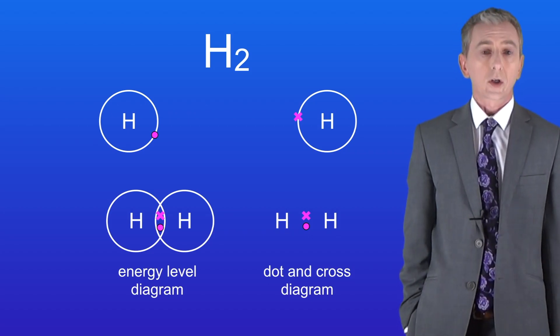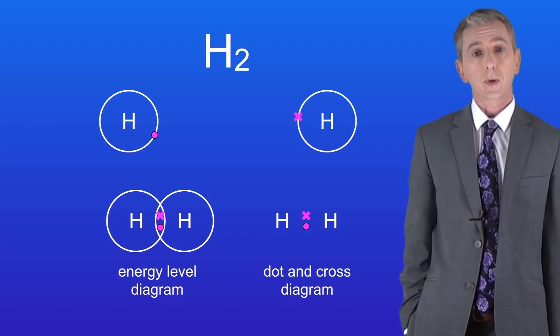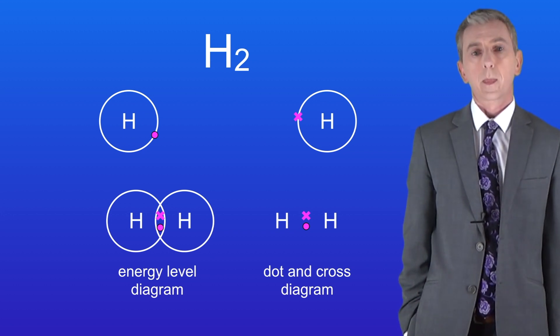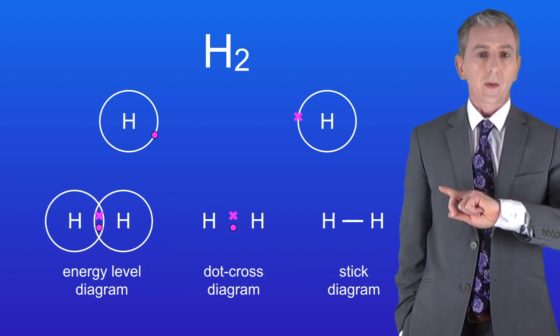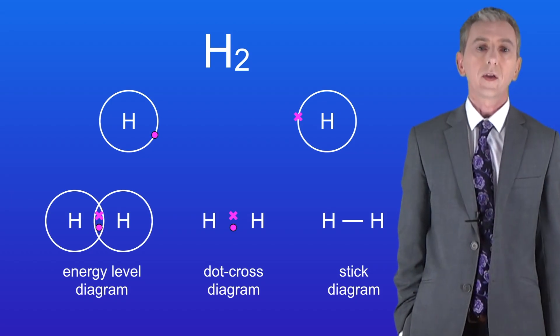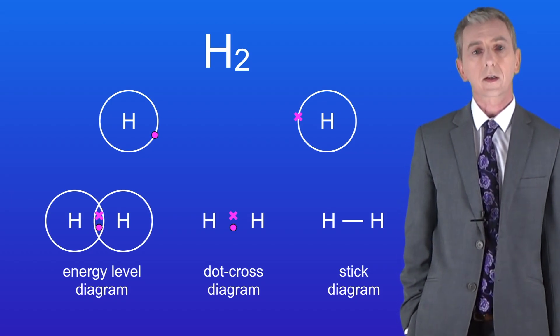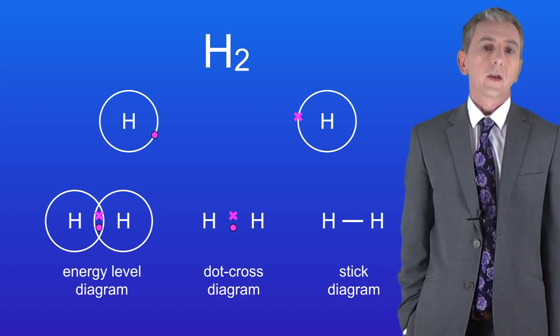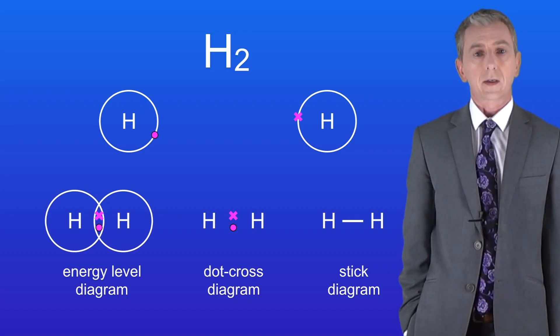We can represent covalent molecules in an even simpler way and this is called a stick diagram. Here's the stick diagram for the hydrogen molecule. This single line represents the single covalent bond. In other words the shared pair of electrons. You'll see stick diagrams a lot in chemistry.